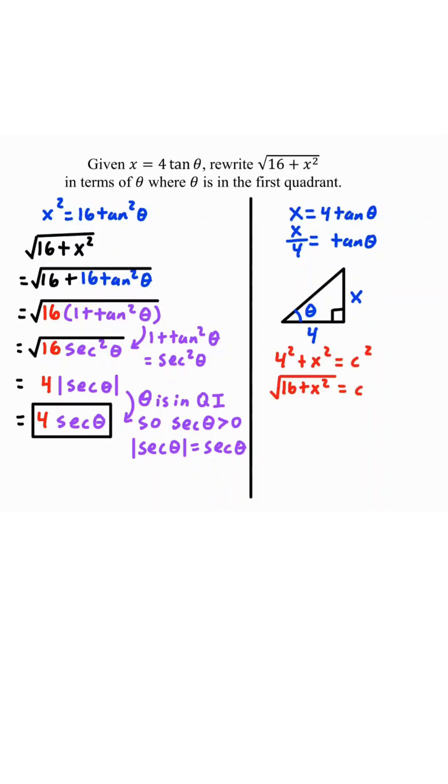If I use the Pythagorean theorem, we'll get the hypotenuse to be the square root of 16 plus x squared. Hey, look, that's what we want.